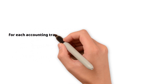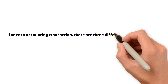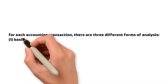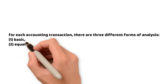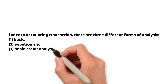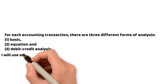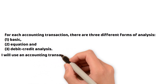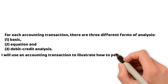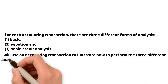For each accounting transaction there are three different forms of analysis: first is a basic analysis, second is equation analysis, third is debit-credit analysis. I will use an accounting transaction to illustrate how to perform the three analyses.